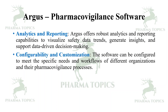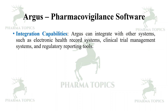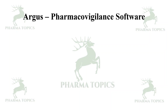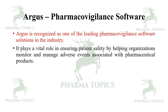Argus software can be configured to meet the specific needs and workflows of different organizations. It integrates with other systems such as electronic health record systems, clinical trial management, and regulatory reporting tools. Oracle also offers cloud-based versions of Argus, providing flexibility, scalability, and remote access. Argus is recognized as one of the leading pharmacovigilance software solutions in the industry, playing a vital role in ensuring patient safety by helping organizations monitor and manage adverse events.